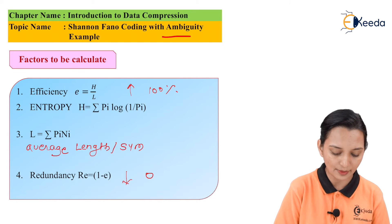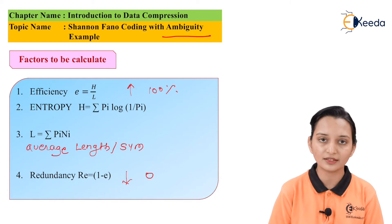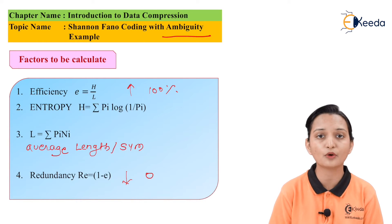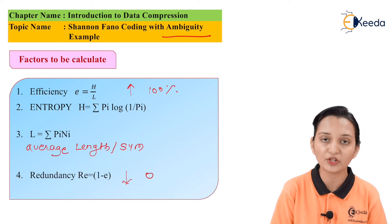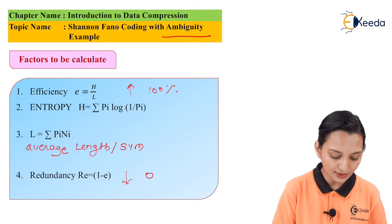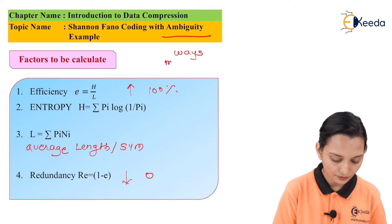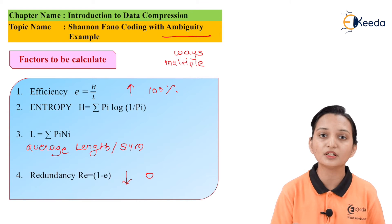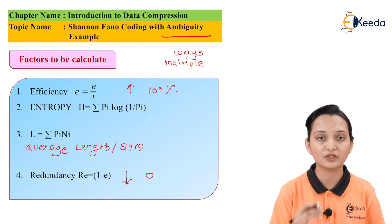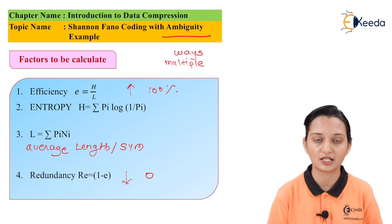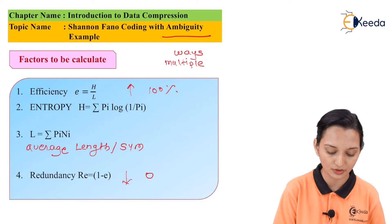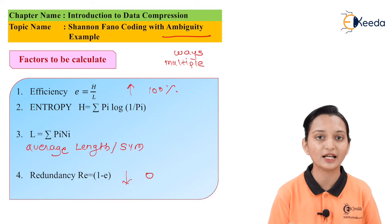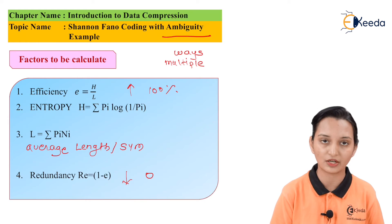Now, exactly what is ambiguity? Up till now in the last lecture we have seen how to calculate all these factors. But when there is a problem of ambiguity — meaning when there are multiple ways to divide our set of probabilities into parts — then which way we have to select? That is what ambiguity means. What we have to do in that particular problem is observe the different ways carefully.